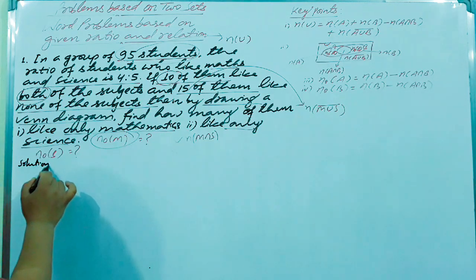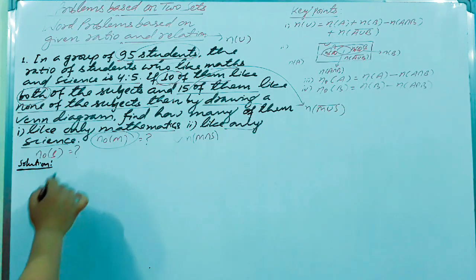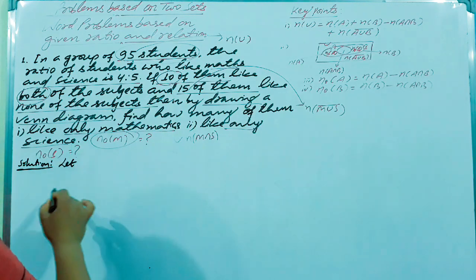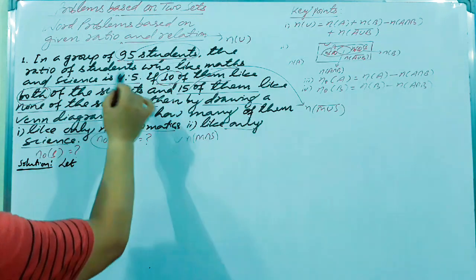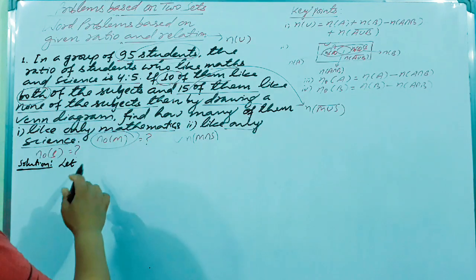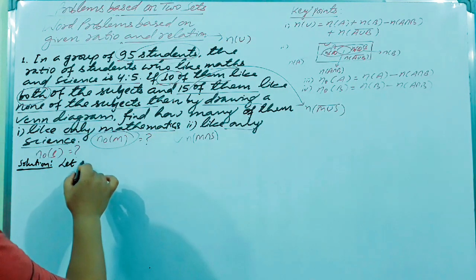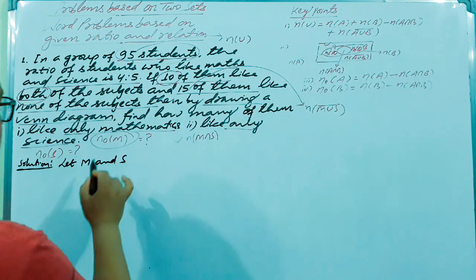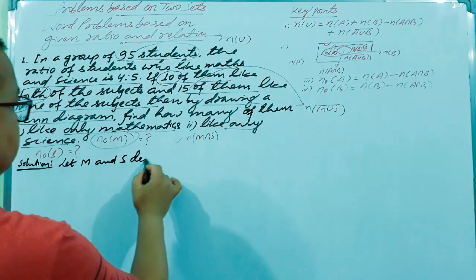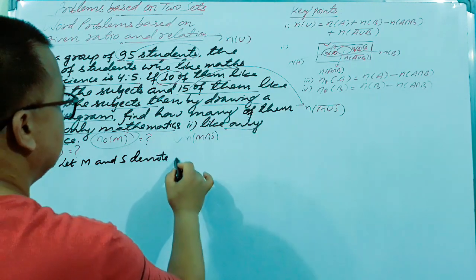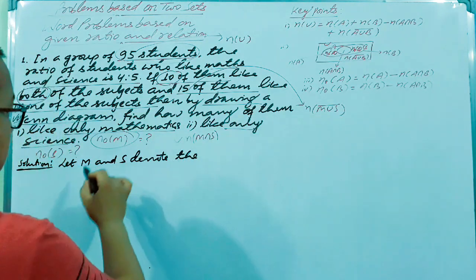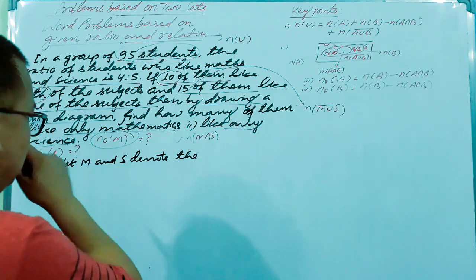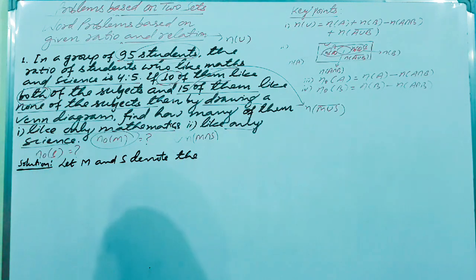For the solution, first write down your variables. Let M and S denote the sets of students who like mathematics and science respectively. Note that capital letters represent sets, not cardinal numbers.